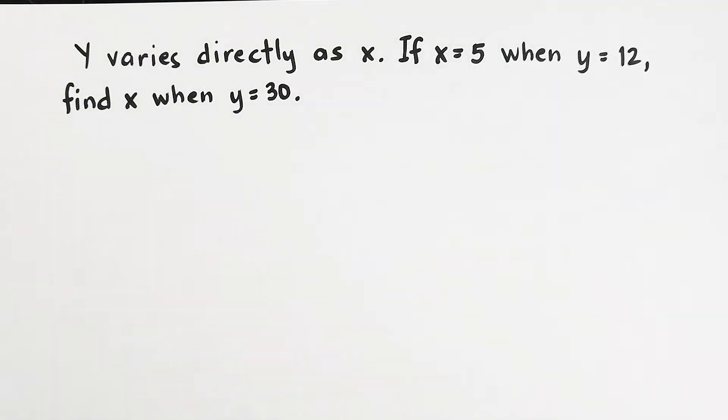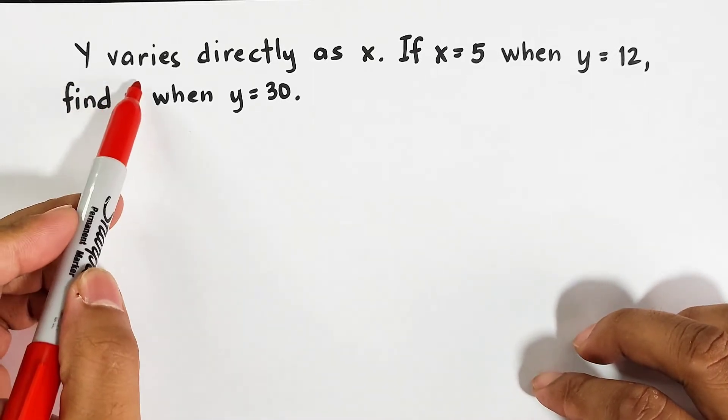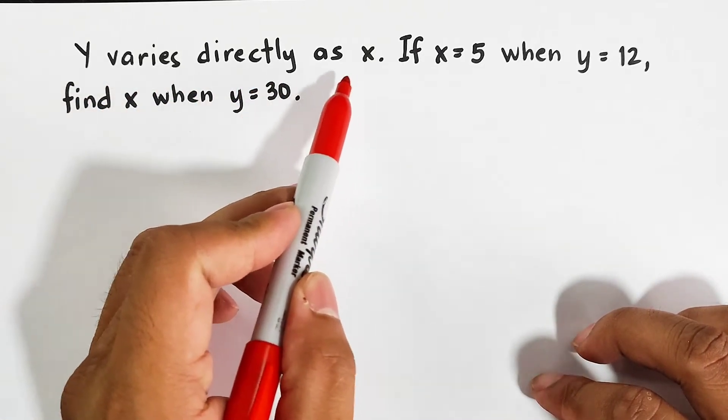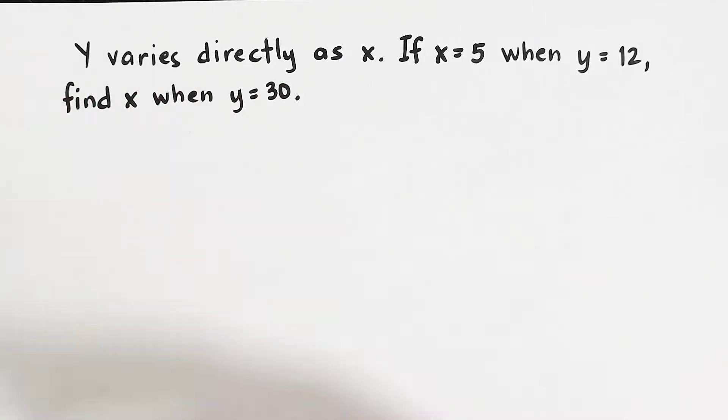So what we have here are two different examples. And this is the first one in solving direct variation problem. So what we have here is y varies directly as x. This statement gives us the idea that this one is under direct variation.